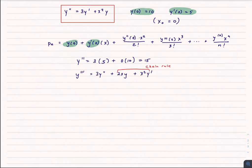Or, y'', the first derivative of that is y'''. The derivative of y' is 3y''. And then I'm going to have to use the chain rule for x²y. I get 2xy plus x²y'. And I can do this for the fourth and the fifth derivatives.